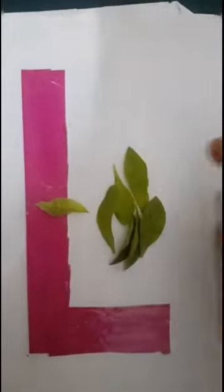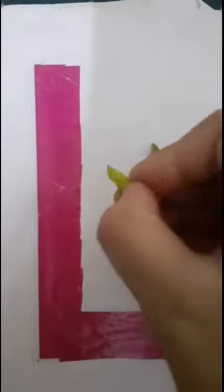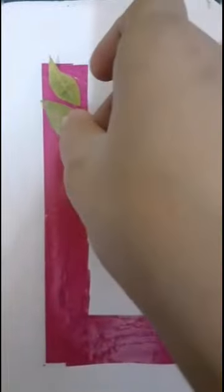Now I will put glue here. And L for a leaf, right? Now I will paste these leaves on L. L for a leaf.